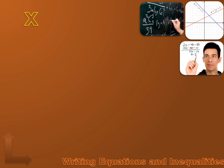Let's say I had a variable, x. It's a number, it's just an unknown number. We don't know what x is, but it's a number. And let's say I also had a constant number, 16. It's a constant number because 16 is always 16. It doesn't vary. It's not a variable number, it's a constant number.